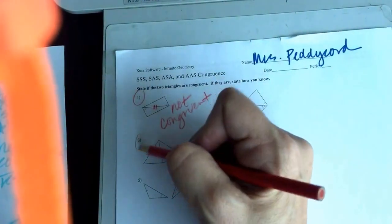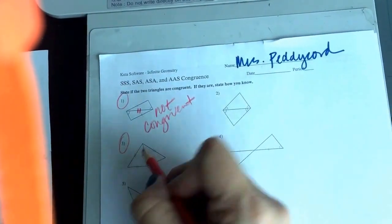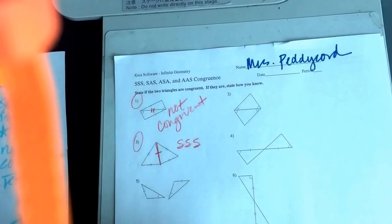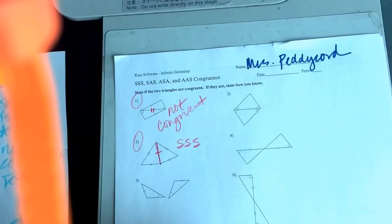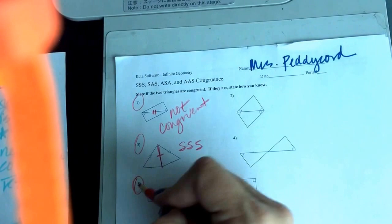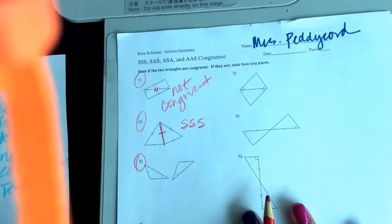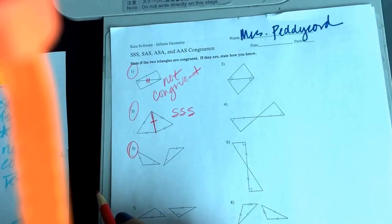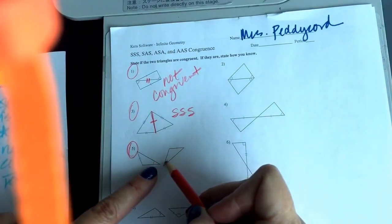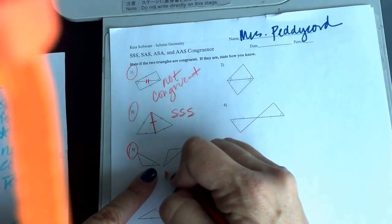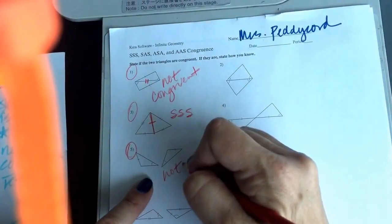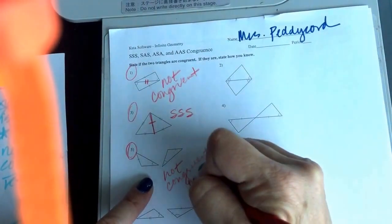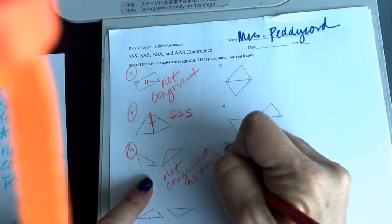Now if I go down and do number three, though, and I go, okay, we share this side. It stands out to me that this would be SSS because we see three pairs of congruent sides. Moving down to number five, I only have a pair of sides and one pair of angles marked, so as far as I'm concerned these are not congruent and there's just not enough info.